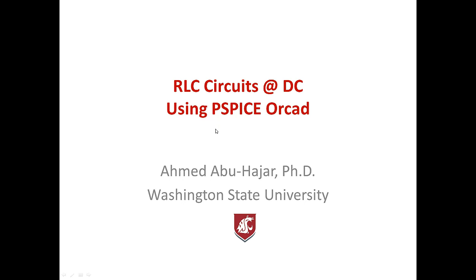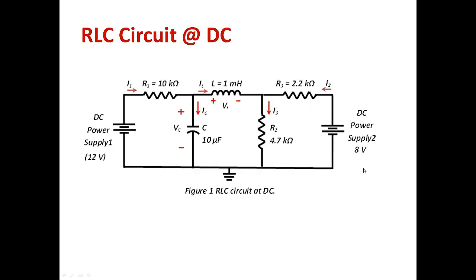Welcome folks. We would like to show you a new tutorial on how to use ORCAD B-SPICE to simulate RLC circuits at DC. Let's assume we have this particular circuit which contains DC voltage sources only. There is no switching and no time-variant sources, so this is a pure DC circuit. We have resistors R1, R2, R3, and also a capacitor and inductor — an RLC circuit at DC.